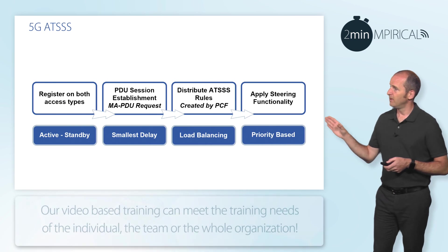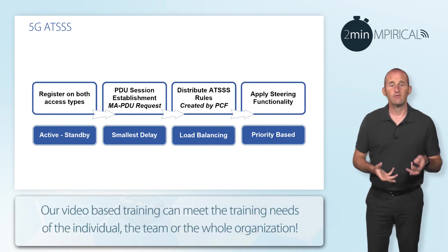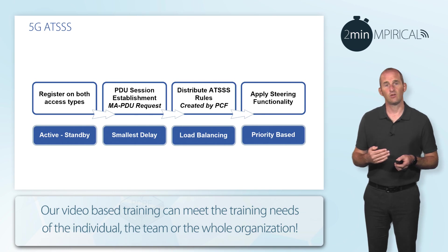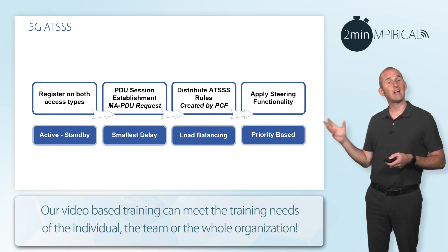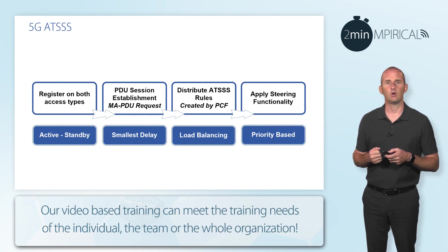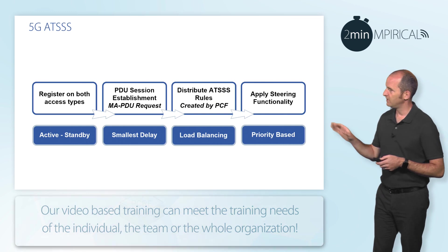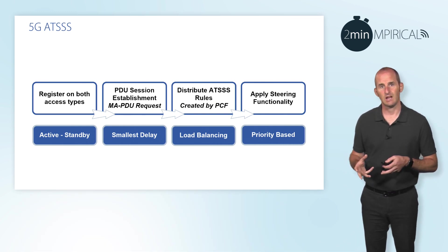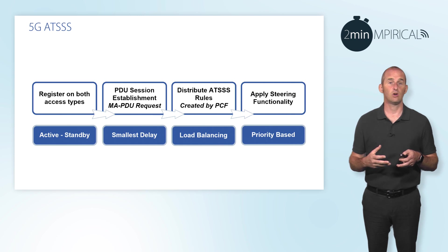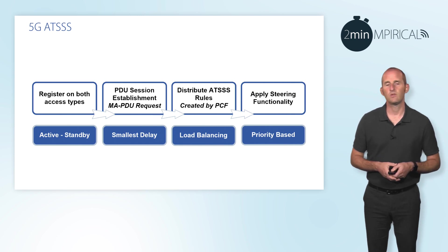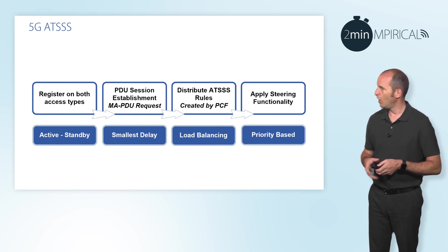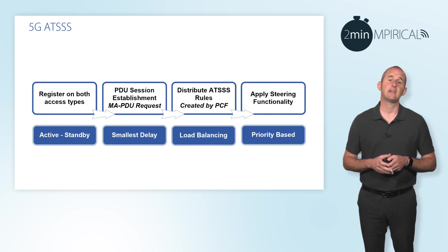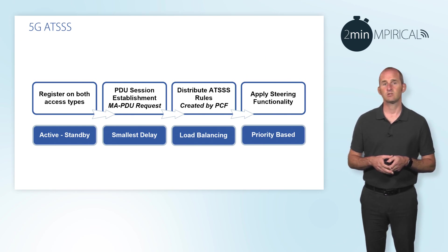For example, it might be set that the Wi-Fi network is the active network, but if that's not available, the standby network — the new radio network — will be used. Alternatively, for certain traffic types, the access network with the smallest delay might be selected. Or it could be a simple load balancing technique between both networks.